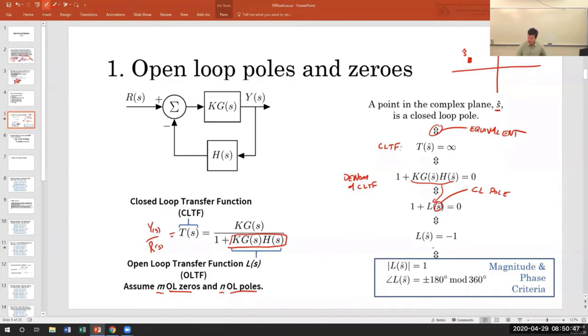Let me try that one more time. If this point in the plane s hat is a closed loop pole, then all of these statements have to be true on the right half of this slide. Including this last one, that the open loop transfer function evaluated at this point must be negative one. So these double headed arrows means is equivalent. In general, L of s is a complex valued, complex argument function. L of s maps the complex plane to the complex plane. Which means that L of s has a magnitude and it also has a phase. And so this statement is equivalent to these pair of statements. This first one is called the magnitude criterion. And this second one is called the phase criterion. They're called criteria because they are tests for whether s hat is a closed loop pole.